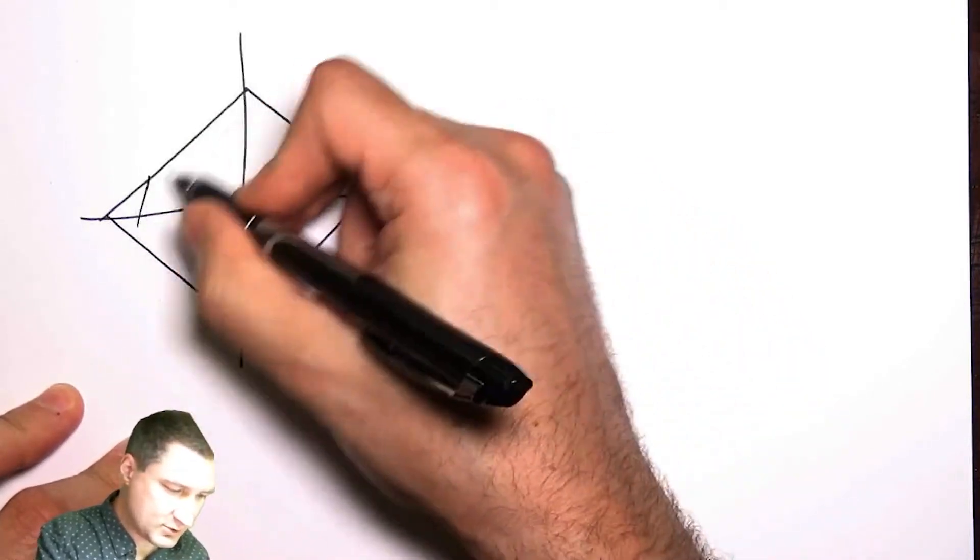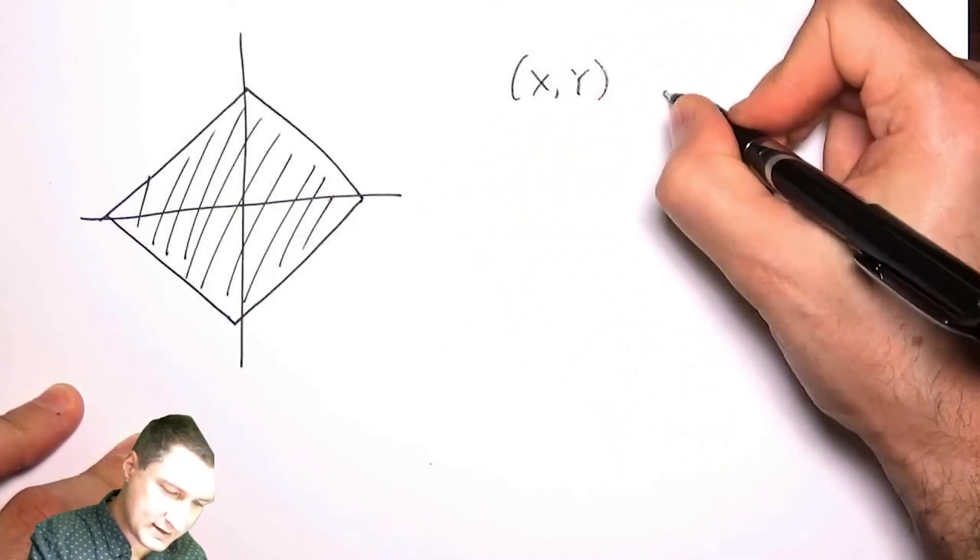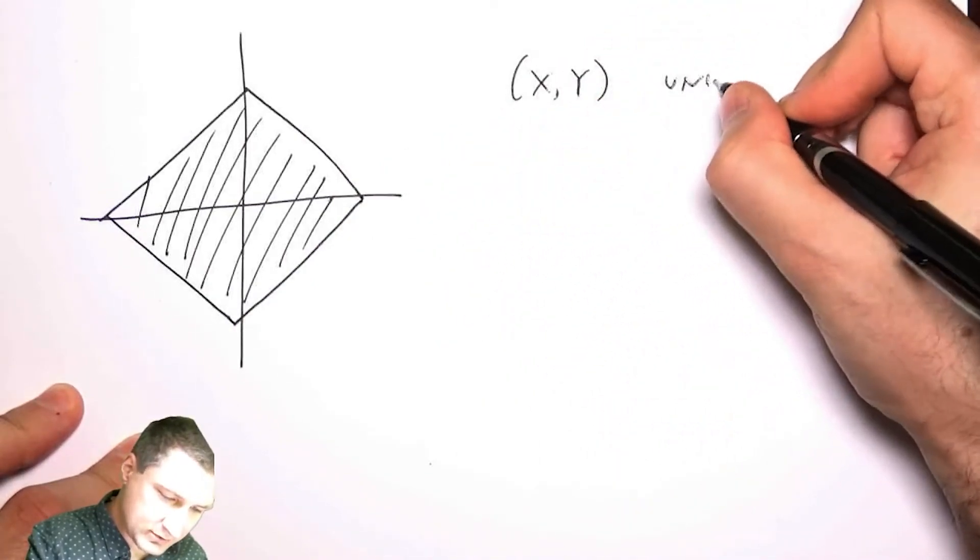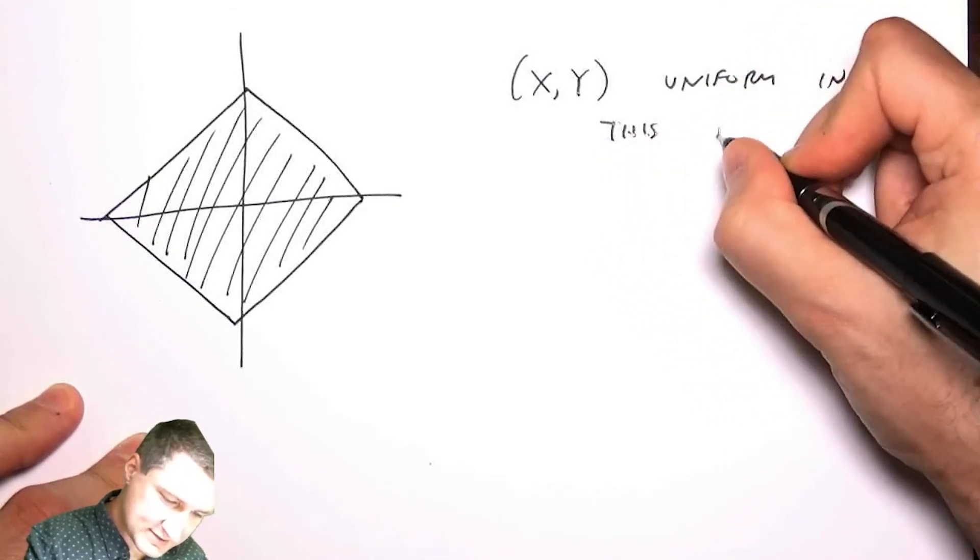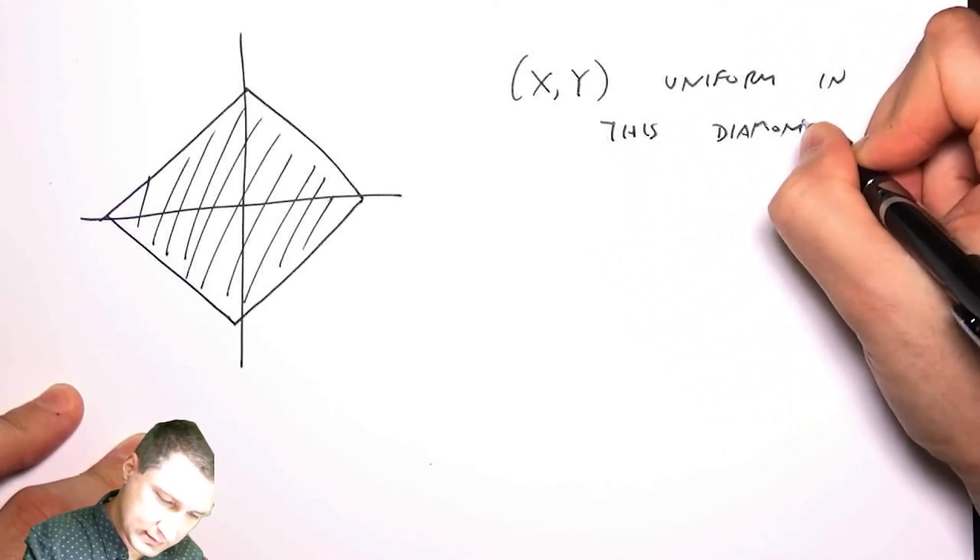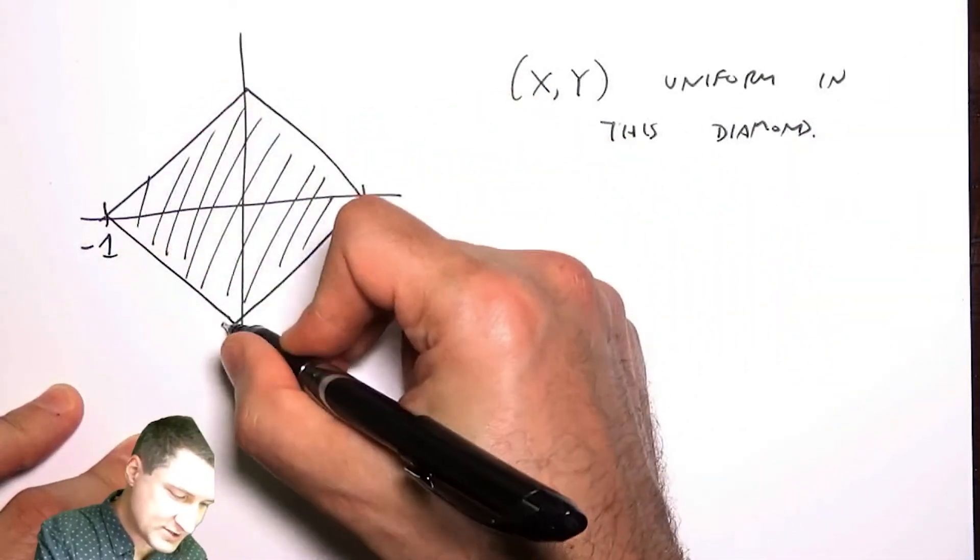Okay, so let's suppose that X and Y are uniform inside this diamond. Let's suppose the diamond goes from plus one to minus one in both dimensions.